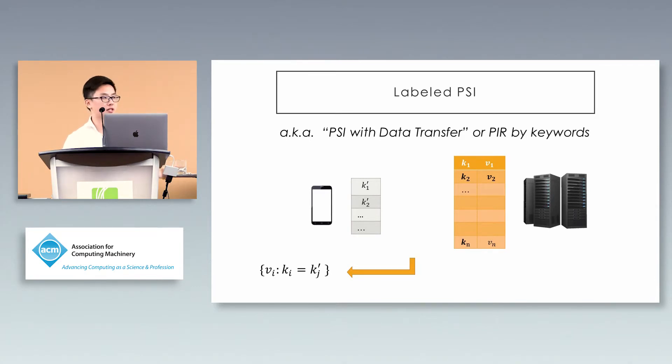PIR by keywords extends this by saying you don't have to know the index of the item in the database. You can just query by keyword, which happens more frequently in practice. In this protocol, the receiver holds a small set of keys, the server holds a dictionary of key-value pairs, and the receiver gets all values corresponding to the keys in its set.